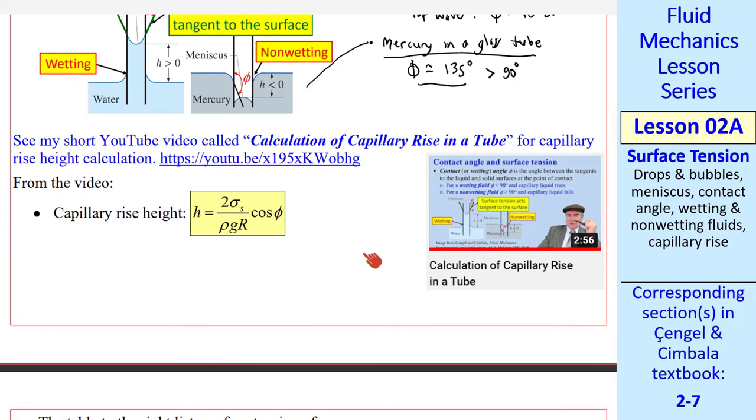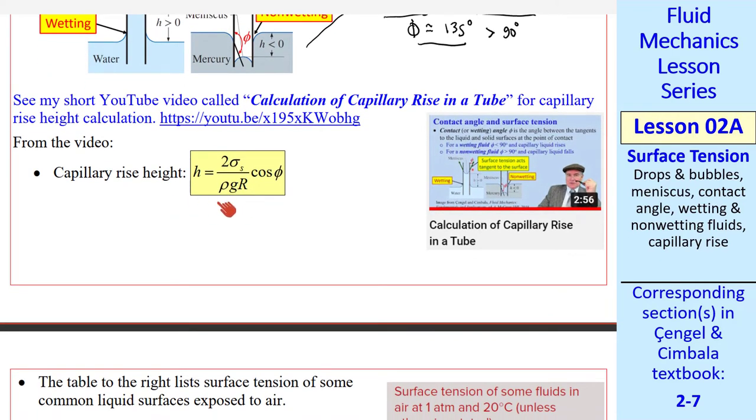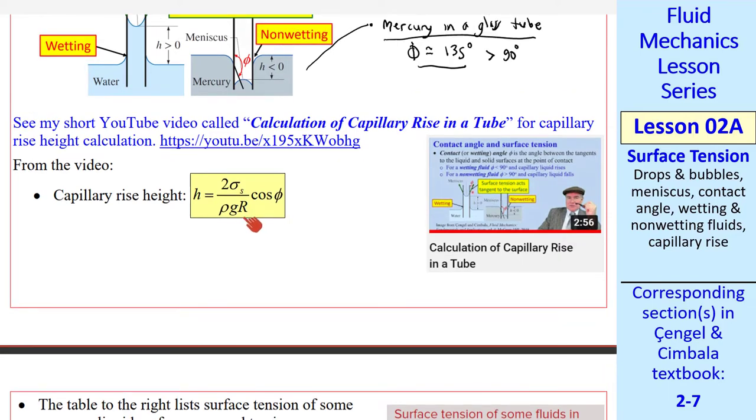I have another short video called Calculation of Capillary Rise in a Tube, where we go through the algebra to derive this capillary rise height equation. R is the radius of the tube. I'll show some clips from that video as well.